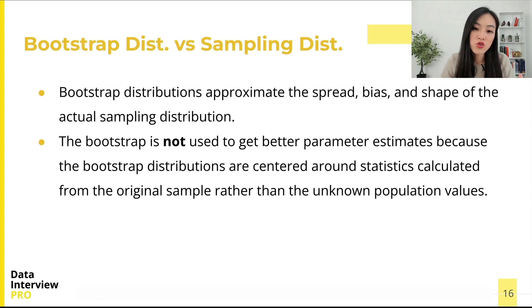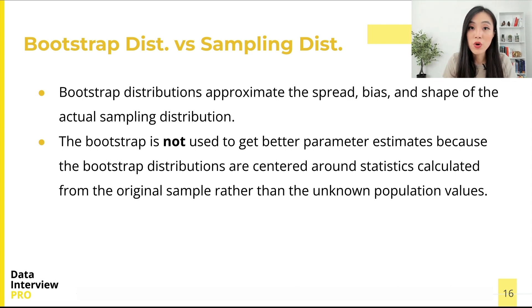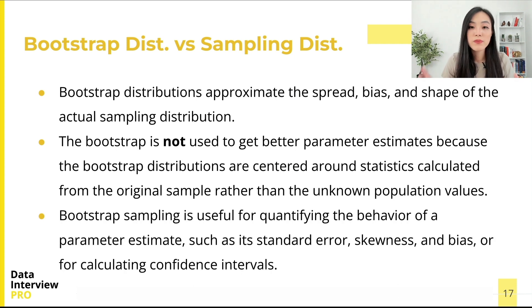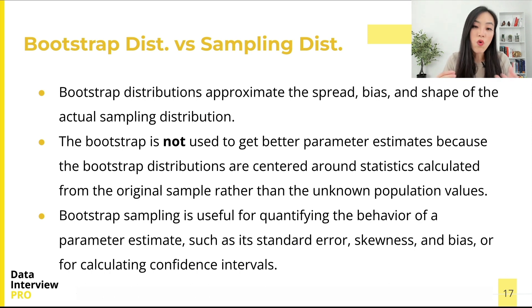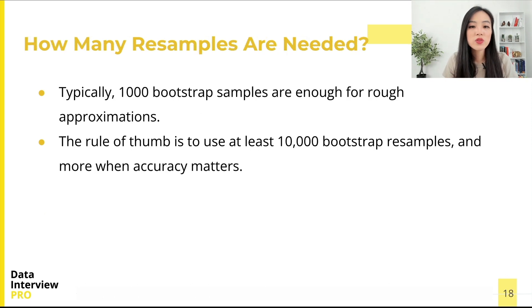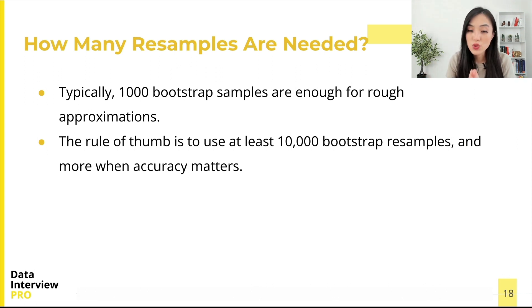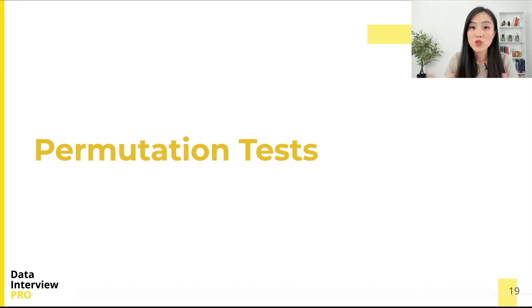For most statistics, bootstrap distributions approximate the spread, bias, and shape of the actual sampling distribution. Bootstrap is not used to get better parameter estimates, since bootstrap distributions are centered around statistics from the original sample rather than the unknown population. Instead, bootstrap is useful for quantifying the behavior of a parameter estimate — such as its standard error, skewness, and bias — or for calculating confidence intervals. Typically, at least ten thousand bootstrap samples are recommended when accuracy matters.